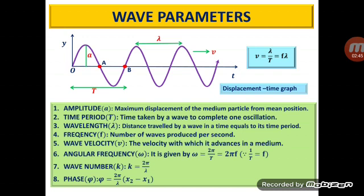The velocity with which a wave advances in a medium is called wave velocity. The angular frequency of a wave is given by omega equals 2 pi by T, or it is given by 2 pi f, whereas the wave number k is given by 2 pi by lambda. Wave number is a very important parameter to know the propagation of light waves through an optical fiber. Phase is a particular point in time on the cycle of a waveform. For example, if we consider particles A and B as shown in the figure, the phase of particle A is pi whereas the phase of particle B is 2 pi.